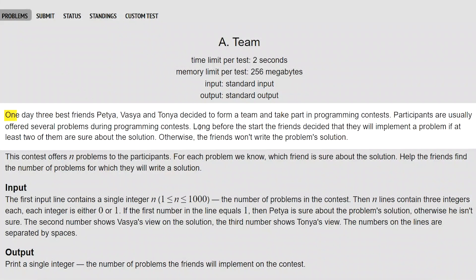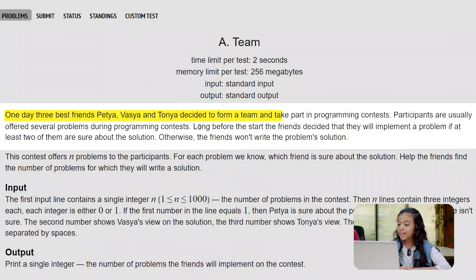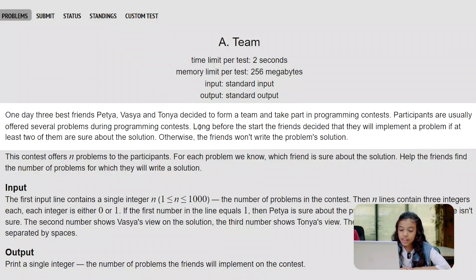One day, three best friends — Petya, Vazia, and Tanya — decided to form a team and take part in programming contests. Participants are usually offered several problems during programming contests. Long before the start, the friends decided that they will implement a problem if at least two of them are sure about the solution.